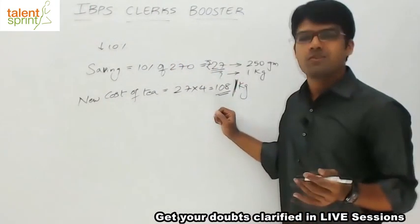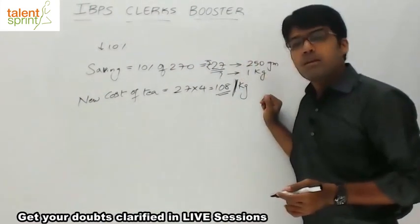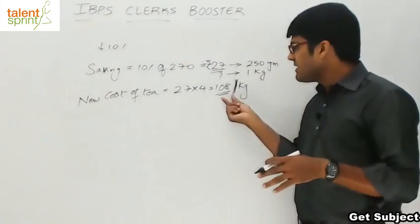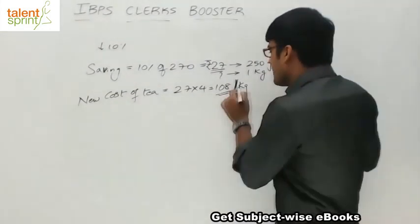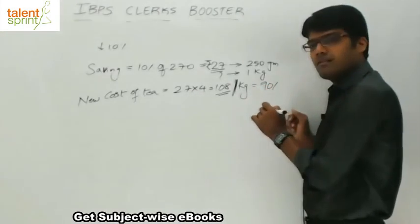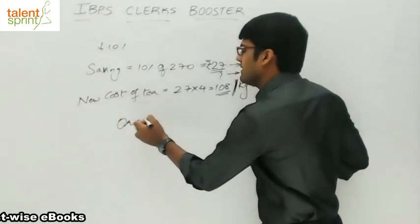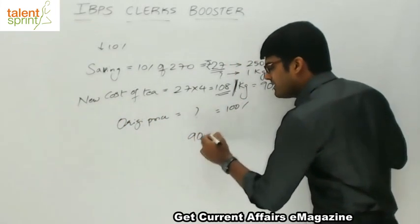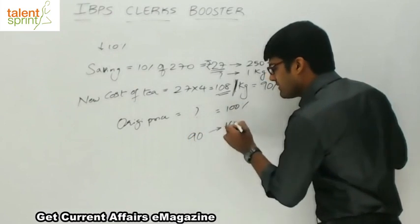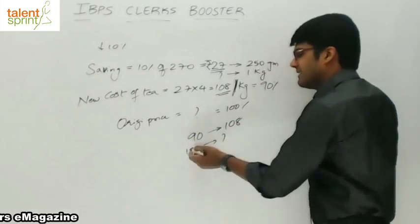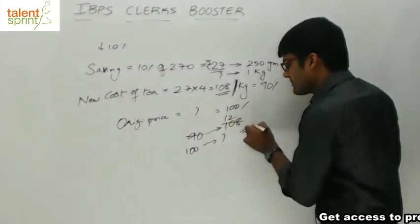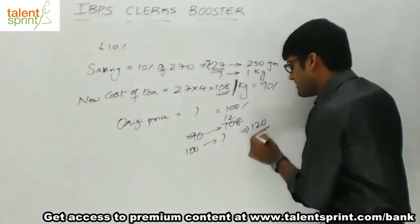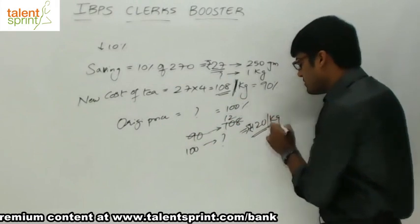The price has reduced by 10%, and after that reduction the new price is 108. So this 108 represents 90% of the original price, while the original price is 100%. Therefore, 90 equals 108, and 100 equals what? Cross multiply: 108 divided by 90 is 1.2 times. 1.2 into 100 is 120. So the original price is 120 rupees per kg.